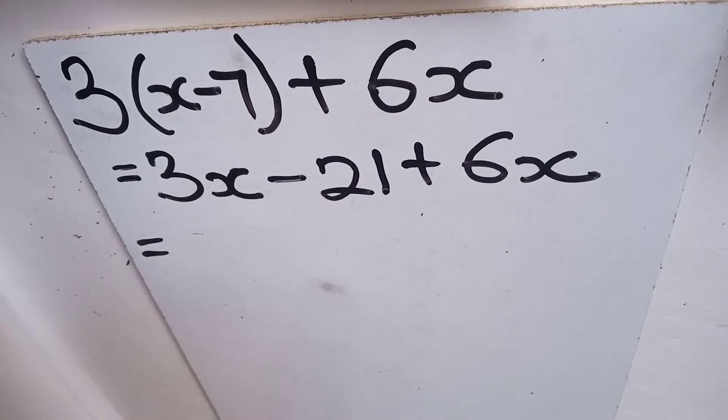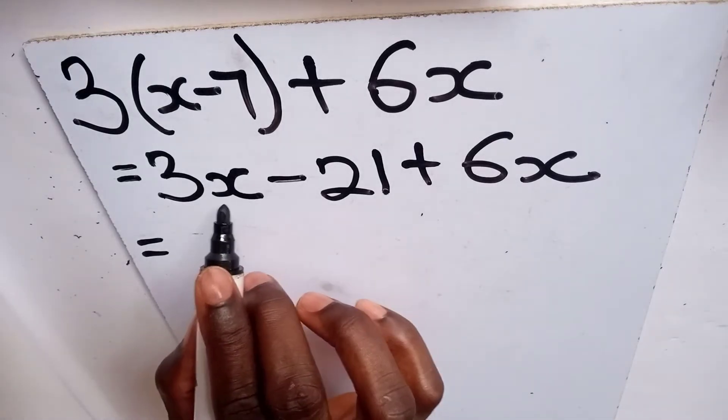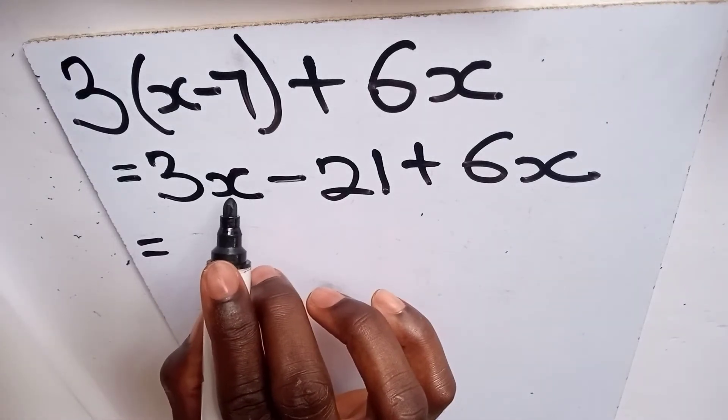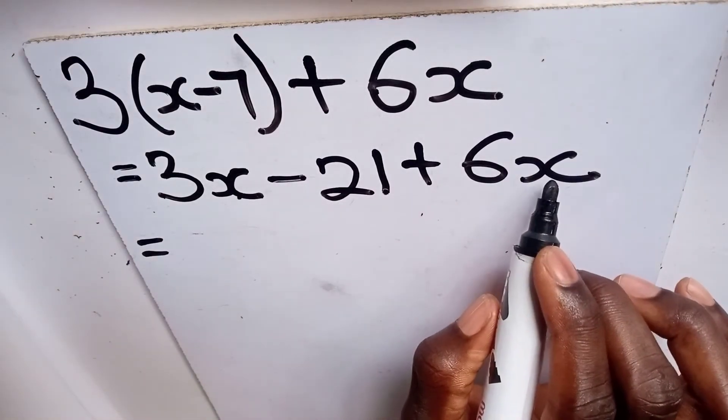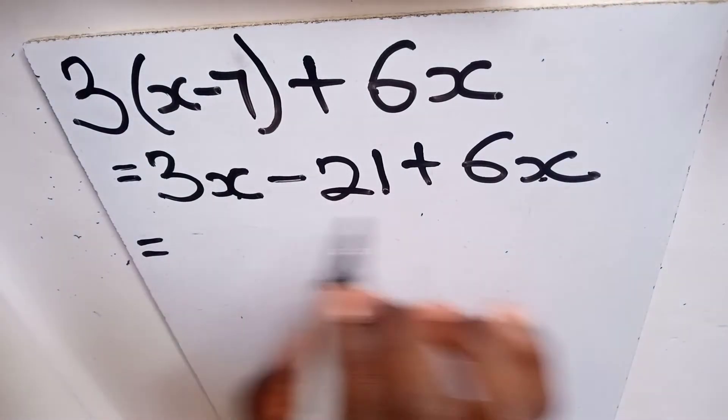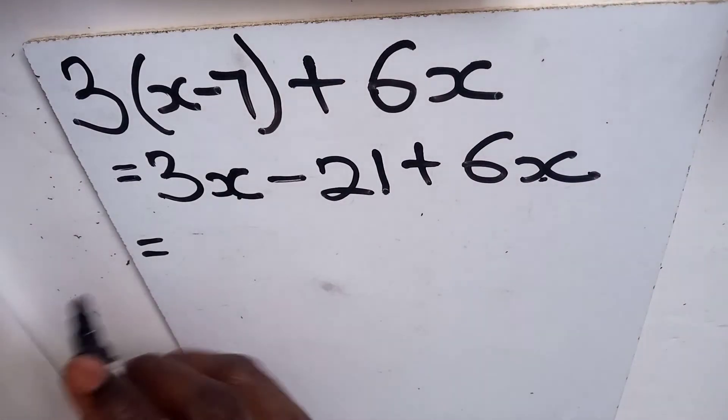We mean the terms which are alike, those having the same variables. When you look at this expression, we have 3x with variable x and 6x with variable x, so 3x and 6x are alike. Those are the like terms.